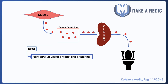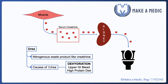Moving on to urea — it's a nitrogenous waste product that's also excreted by the kidneys, and hence an elevation in your serum urea concentration would be suggestive of some sort of renal impairment. However, there are a few caveats to interpreting urea. First of all, urea is partially reabsorbed within the kidneys.